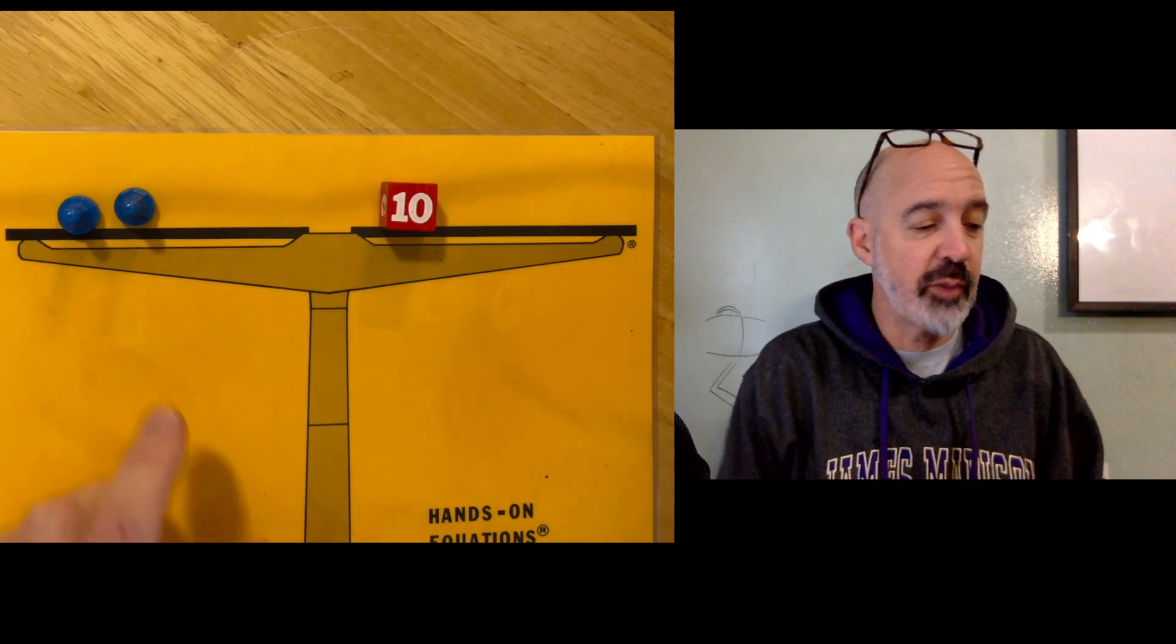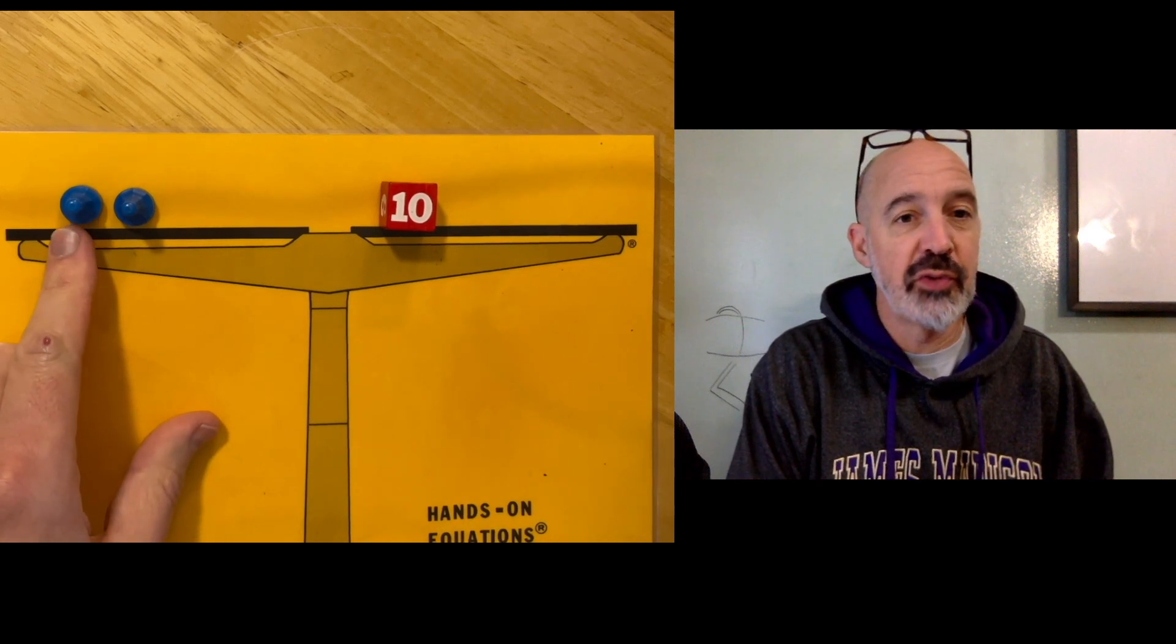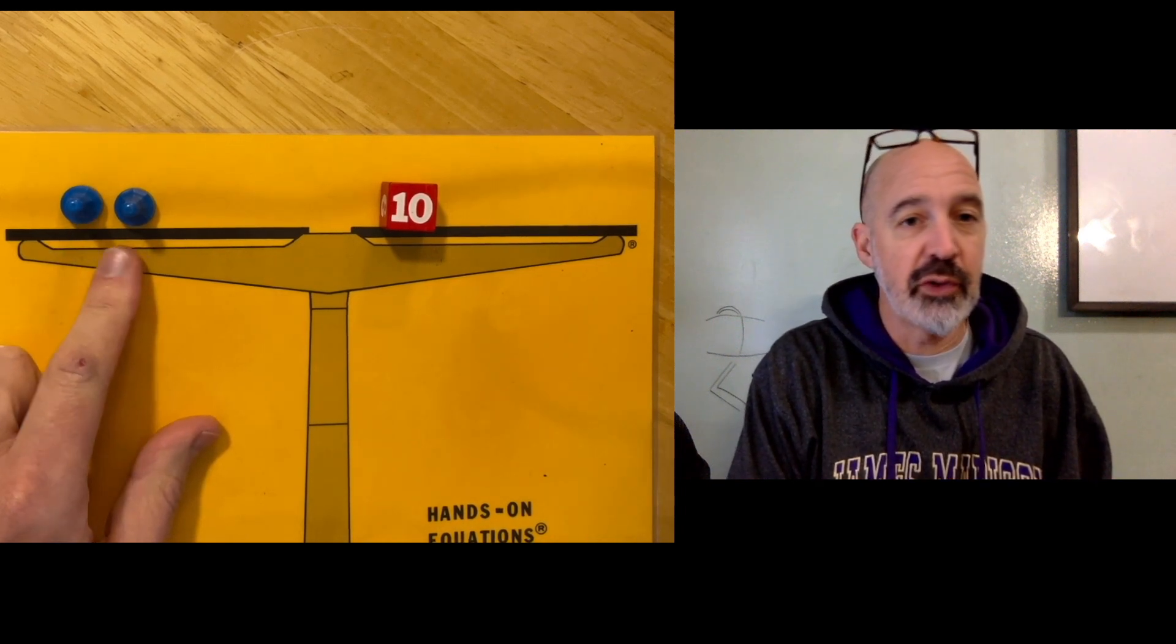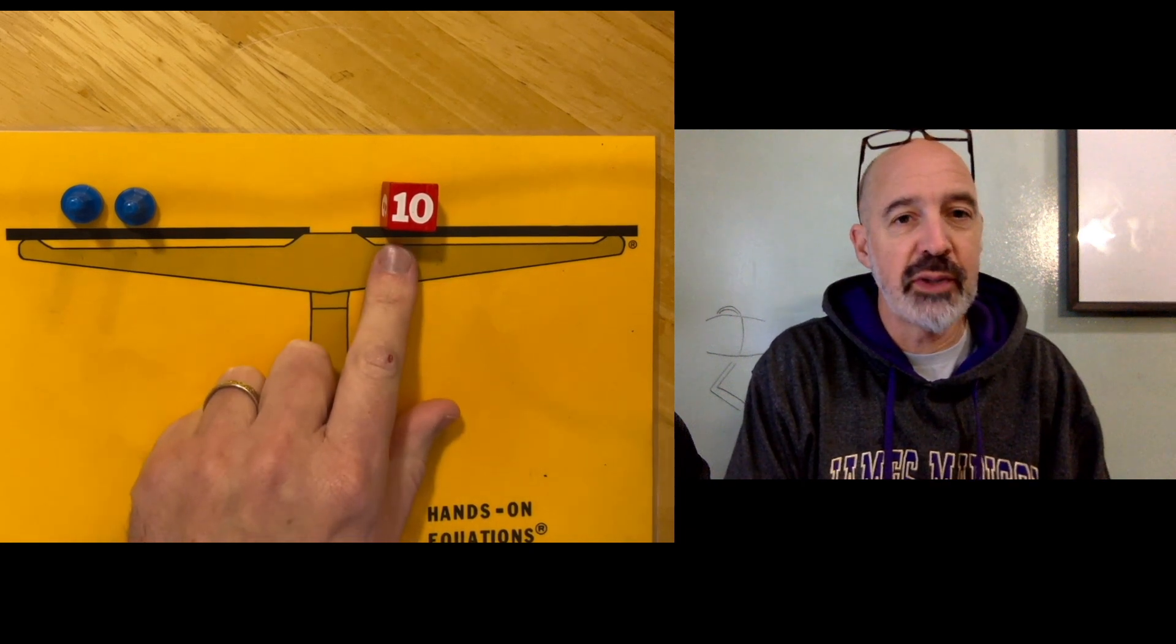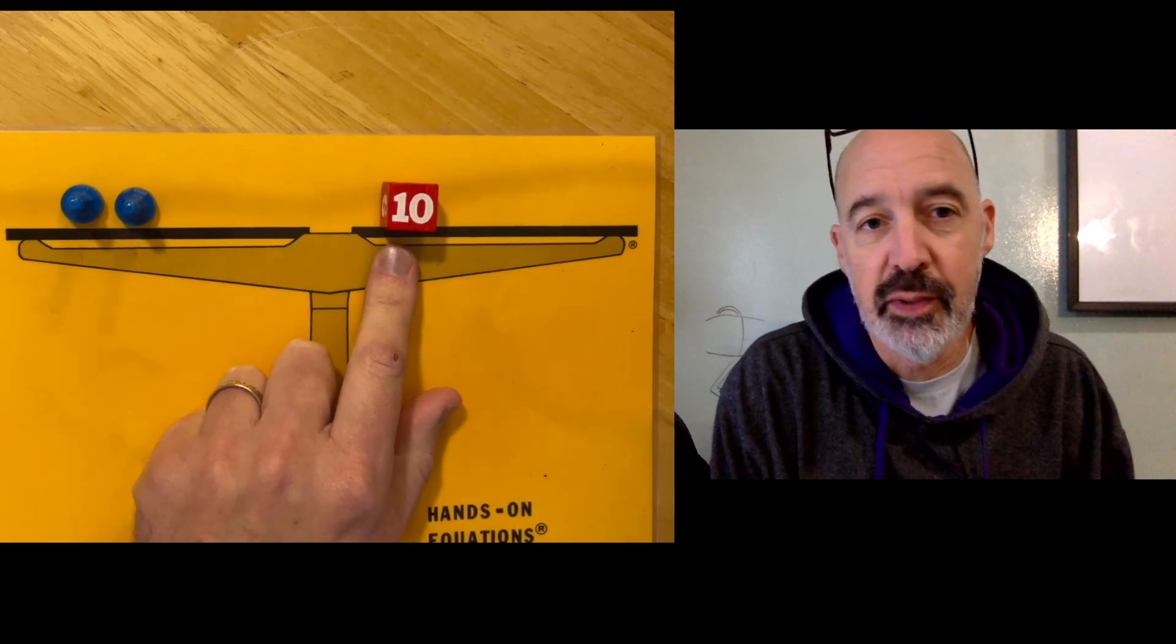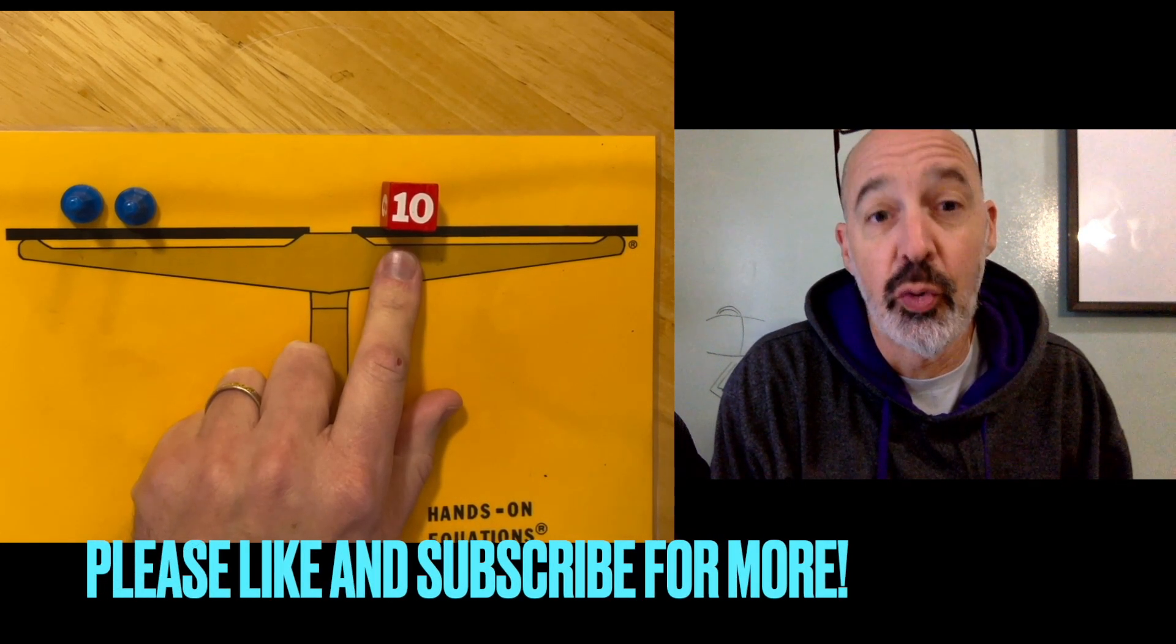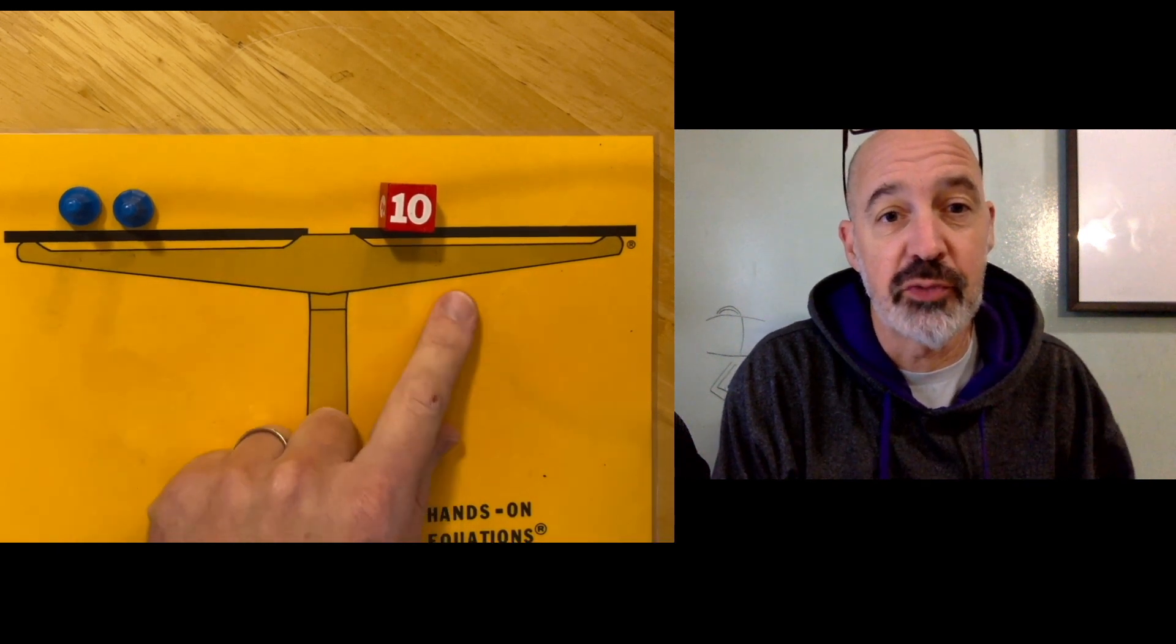So in this example, remember these blue pawns represent a variable, an unknown, which we call x, and this red dice represents a positive whole number. So this represents two pawns equals 10.